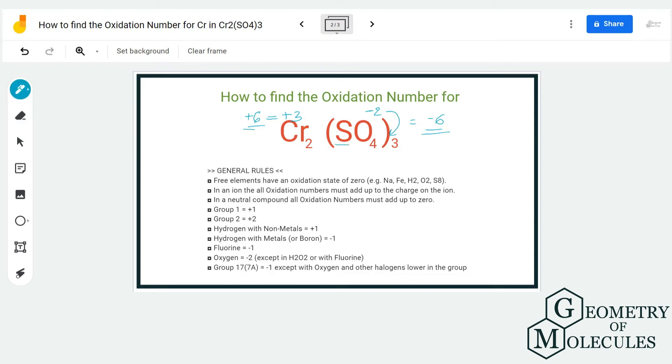But we do know that oxygen has an oxidation number of -2, and the complete charges on SO₄ is -2. So what we know is the oxidation number of oxygen and the charges on SO₄.